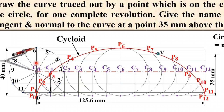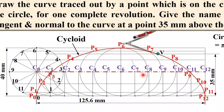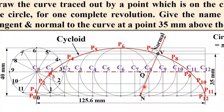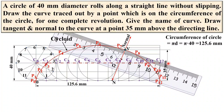Set the compass to 20 mm radius — the radius of the rolling circle. Take V as the center and draw the arc on the center line. This arc will cut the center line at a point — mark it as Q. Now join VQ. Next, draw the vertical line passing through Q, which will intersect the directing line at a point — give it the name N. Join N to V — that is your normal.